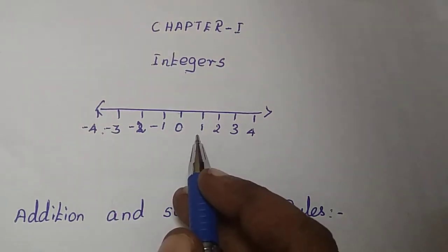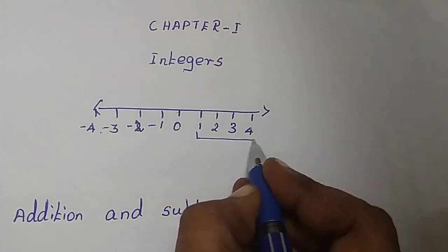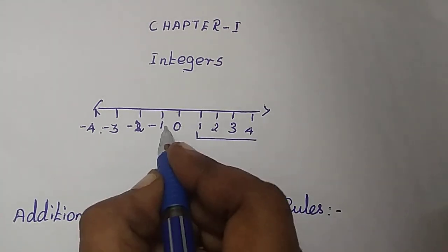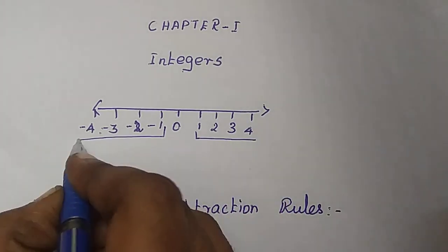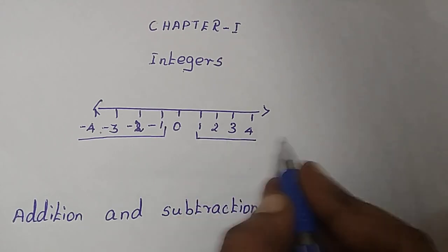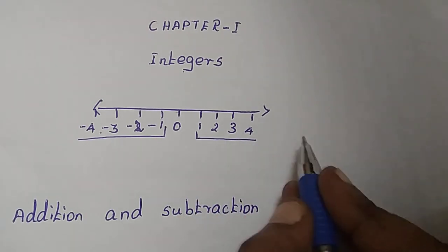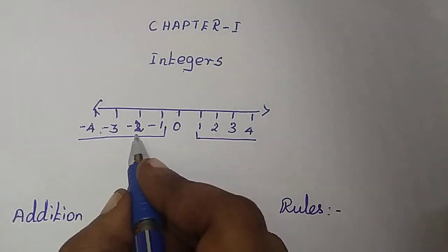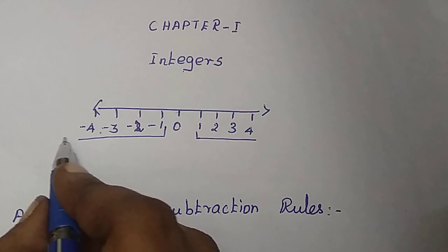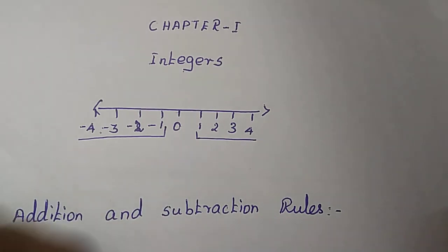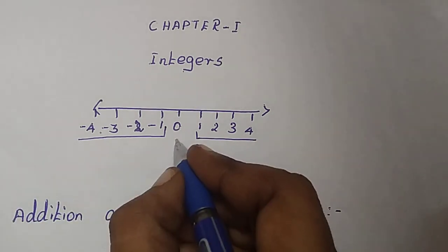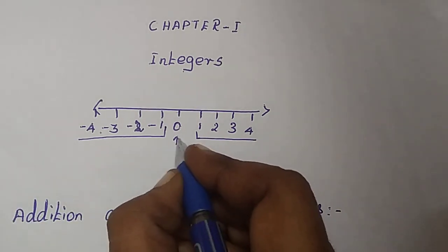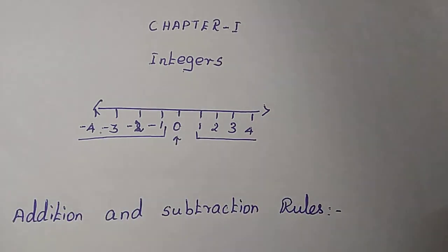We have 2 types of integers. One is positive integer, another one is negative integer. 1, 2, 3 and so on is called positive integer. Minus 1, minus 2, minus 3, minus 4 and so on is called a negative integer. This 0 is neither positive nor negative.